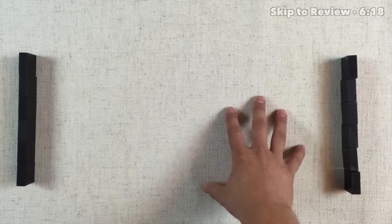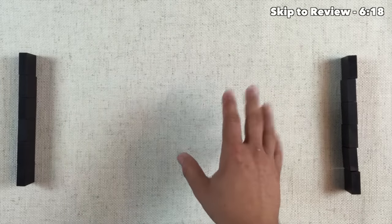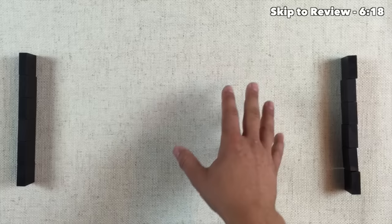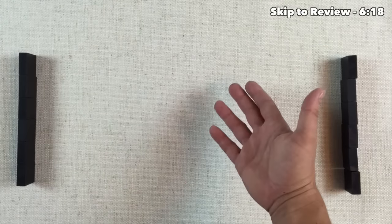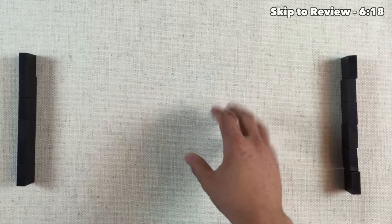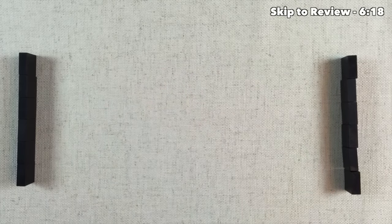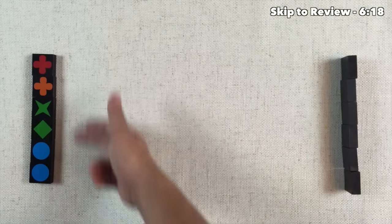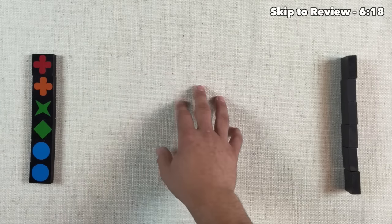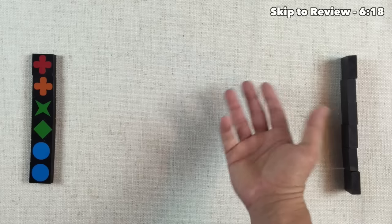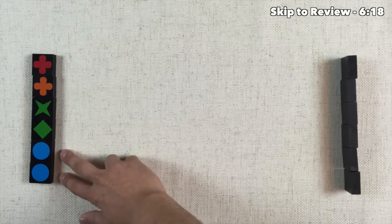Here's the starting setup for a game of Qwirkle. Whether you're playing two to four players, you just begin with an empty board, and each player takes six random tiles out of the bag. The tiles are made up of various symbols and colors. There are six different symbols and six different colors, and there are also three of each identical tile in the bag.